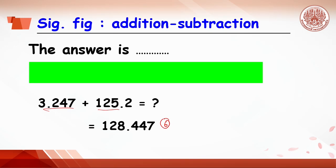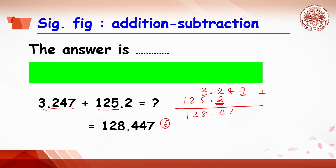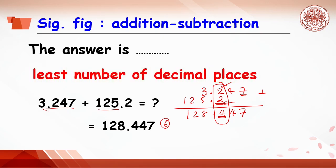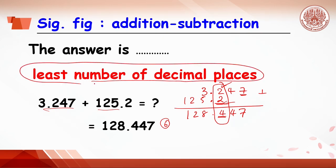To find the correct significant figures for addition, consider 3.247 plus 125.2. Here, the digit 2 in 3.247 and the digit 2 in 125.2 are both uncertain numbers. After adding we get 128.447, but an uncertain number plus a certain number yields an uncertain number. For addition, the significant figure should reflect the least number of decimal places. So the answer is 128.4, where 4 is the uncertain digit and 128 is certain.